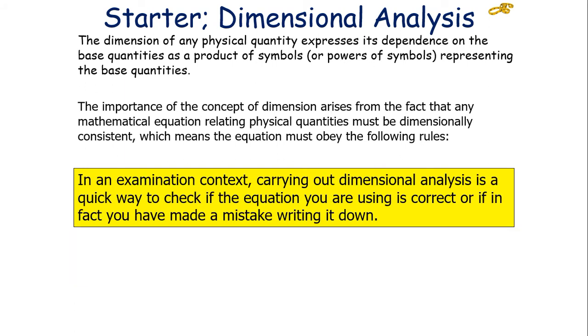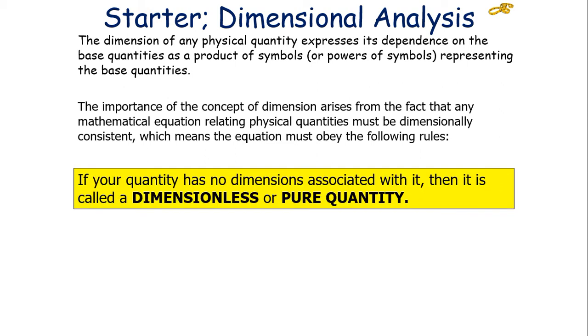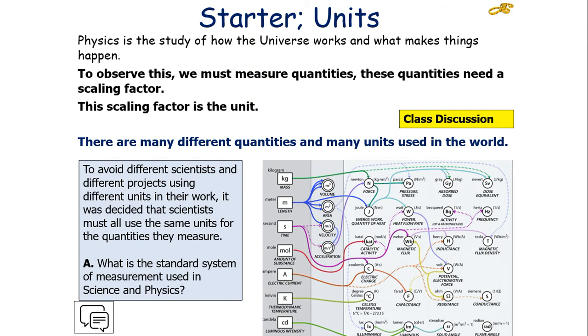This simple fact can be used to check for typos or algebra mistakes, help remember the different laws of physics, and can even suggest that there must be a new law of physics if it doesn't make sense from what you knew previously. In an examination context, carrying out dimensional analysis is a quick way to check if the equation you are using is correct. If your quantity has no dimensions associated with it, then it's called a dimensionless or pure quantity.